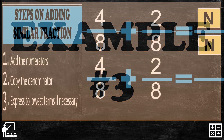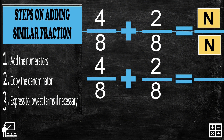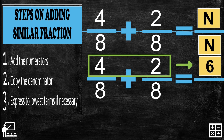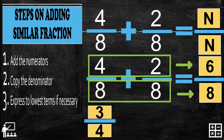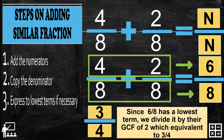Example number 3. We have 4 over 8 plus 2 over 8. First, add the numerators. The numerators are 4 and 2, so 4 plus 2 gives you 6. Step 2: copy the denominator. The denominator of the two fractions is 8. Step 3: express to lowest terms if necessary. This time, 6 over 8 has a lowest term.